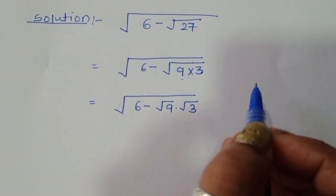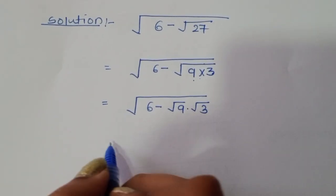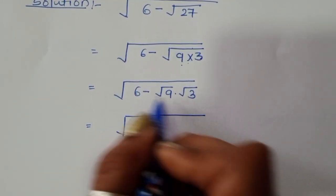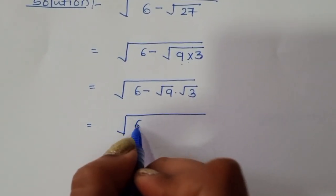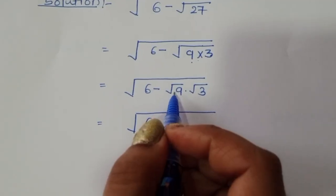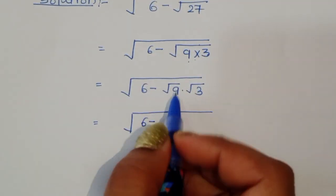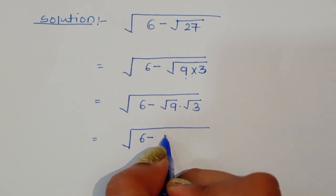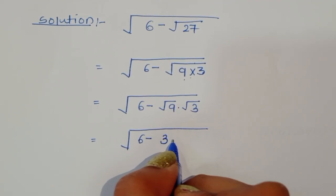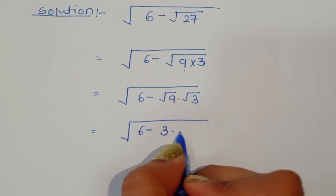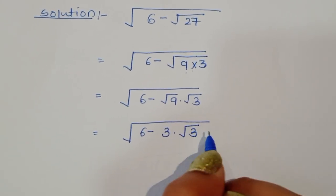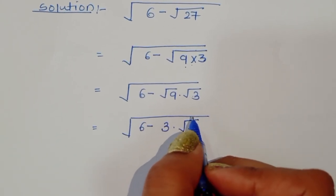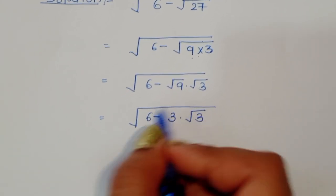Now, square root of 9 is equal to 3. So this becomes square root of 6 minus 3 times square root of 3.